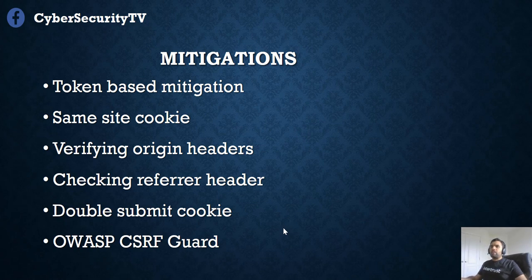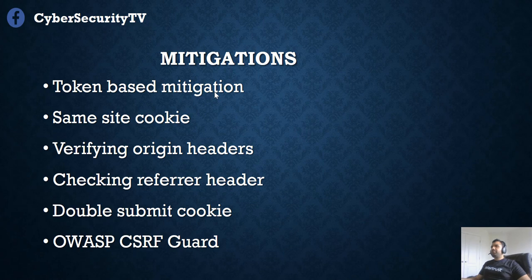Now let's talk about mitigations. There are multiple mitigations depending on your situation. The first is token-based mitigation. You have a random anti-CSRF token in the request body, valid only for one user — you don't have the same token for everyone. When the user is authenticated, along with setting up a session token, you also set up a random token that must be included in each request submitted by the user. When the request comes to the server, the server validates whether the token matches — if it does, the transaction goes through; otherwise it does not.